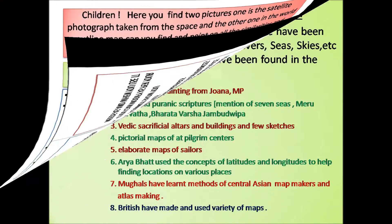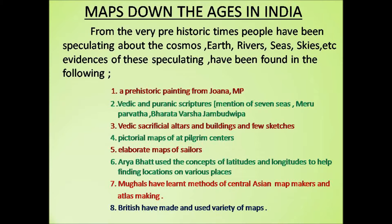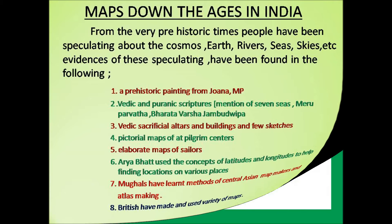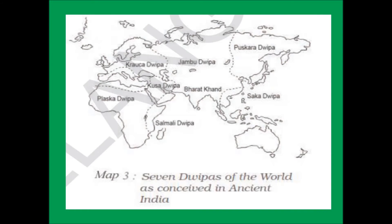Now we'll see maps down the ages in India. From very prehistoric times, people have been speculating about the cosmos, earth, rivers, seas, and skies. Evidences of these speculations have been found in a prehistoric painting from Jaora, MP, and in Vedic and Puranic scriptures which mention seven seas, Meri Parvata, Bharata Varsha, and Jambudvipa, as well as Vedic sacrificial altars and buildings.